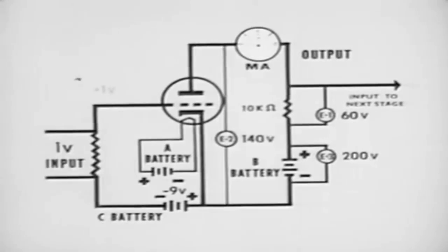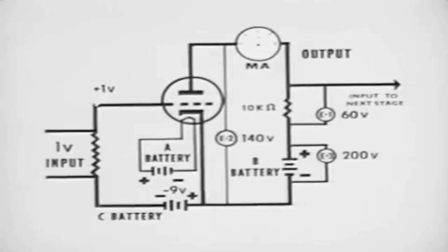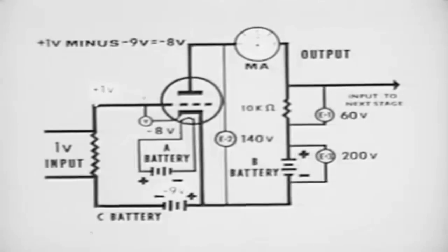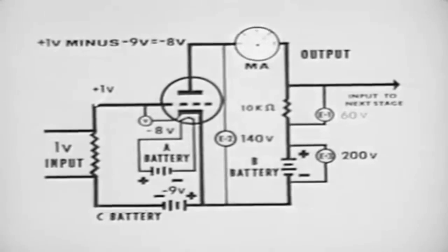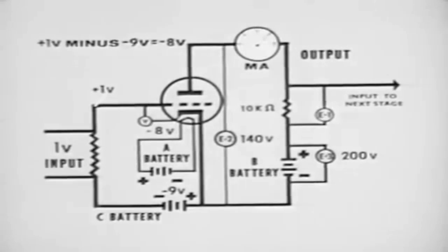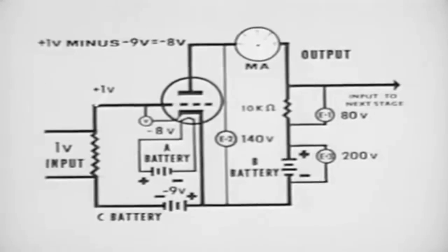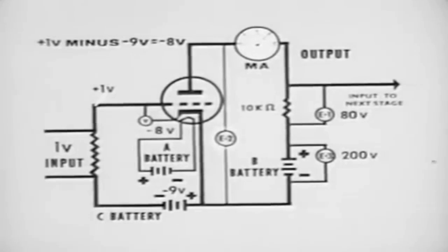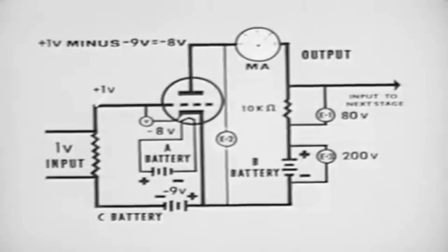When the positive portion of the signal reaches a peak of 1 volt, there is a difference of potential between grid and cathode of minus 8 volts. This is found by subtracting plus 1 volt from minus 9 volts. This reduction of the voltage difference between the grid and cathode allows more current to flow. If the current flow increases to 8 milliamperes, this causes the voltage across the load resistor to increase to 80 volts. The voltage between the plate and cathode will consequently decrease to 120 volts.